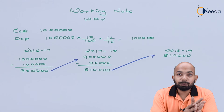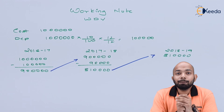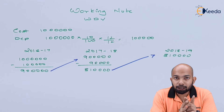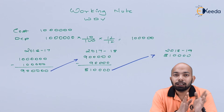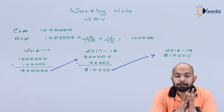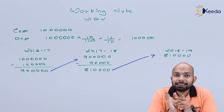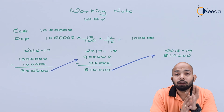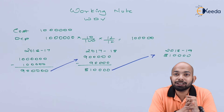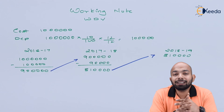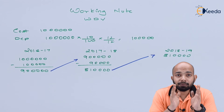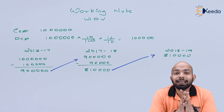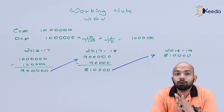Under WDV method, 10% WDV rate of depreciation is charged on the cost of the asset. In the first year, the depreciation amount is the same — ₹1 lakh. However, in the second year, the balance carried forward under WDV which is ₹9 lakhs is used for calculating depreciation, giving ₹90,000 depreciation in the 2nd year. This gives a closing balance of ₹8 lakhs 10,000. These two points will now be compared to figure out the difference.